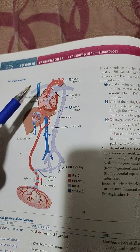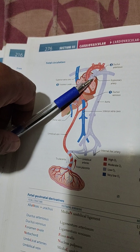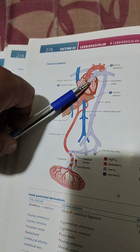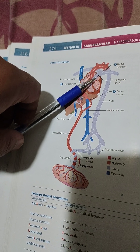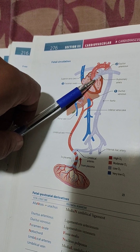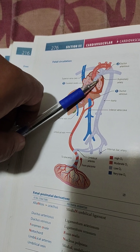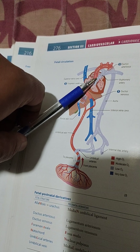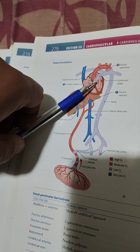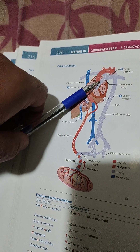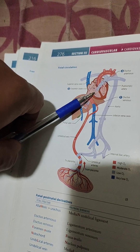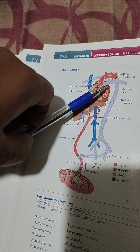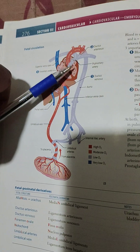A cardiac anomaly to note is transposition of great vessels. The pulmonary artery and aorta are both called great vessels. Sometimes the spiraling of the septum between these two conduits is not proper, causing the aorta to connect to the right heart and the pulmonary artery to connect to the left heart.